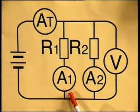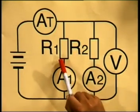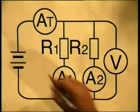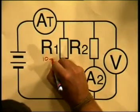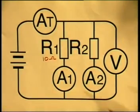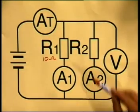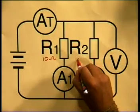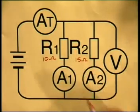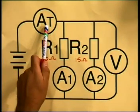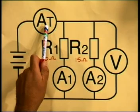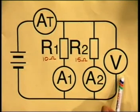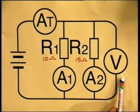Ammeter A1 measures the current through resistor R1, which has the lower resistance of 10 ohms, while ammeter A2 measures the current through R2, which has the higher resistance of 15 ohms. AT measures the total current supplied by the battery. The voltmeter measures the total potential difference across the resistors.